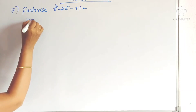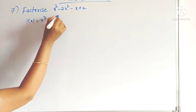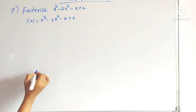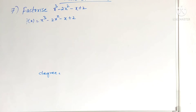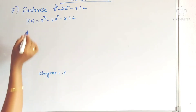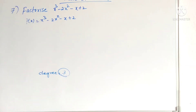The given polynomial p(x) is equal to this. Now you have to identify the degree. The degree is nothing but the highest power. The highest power here is 3, so there are 3 factors for this polynomial. How many factors do we have to find out? 3 factors.